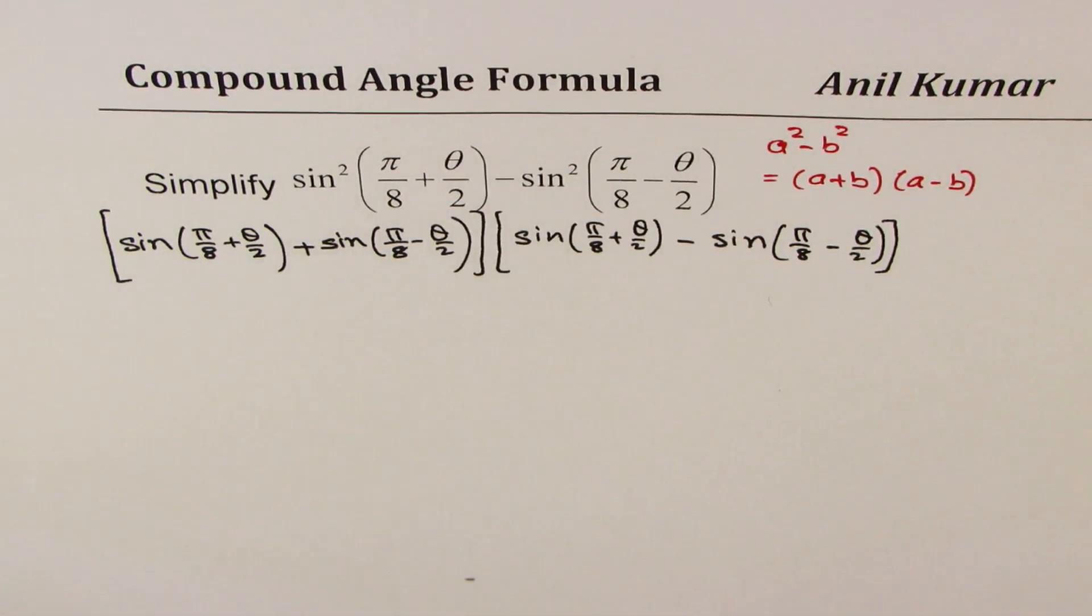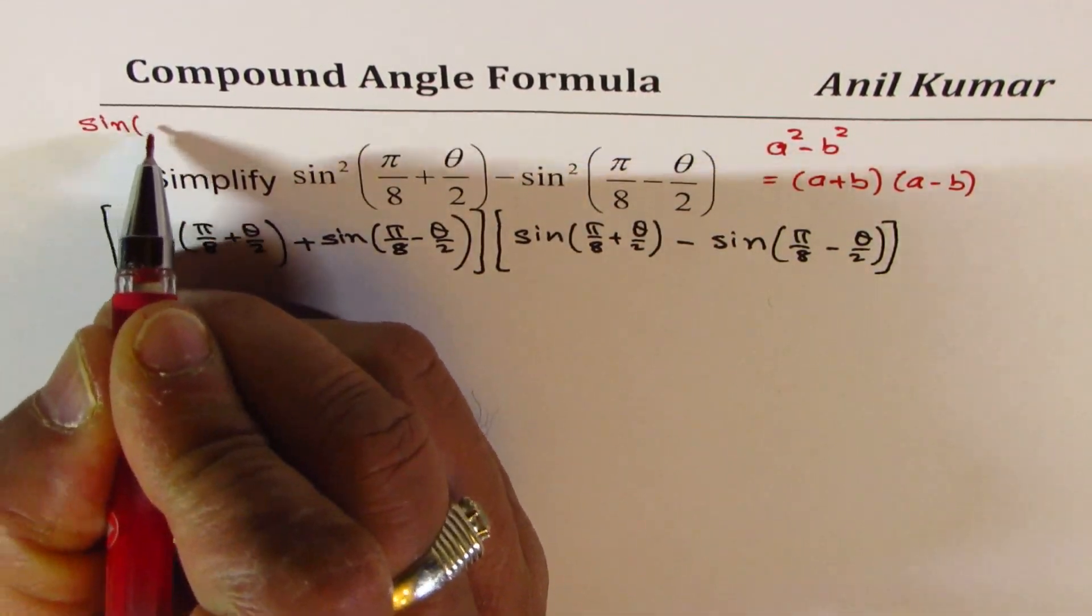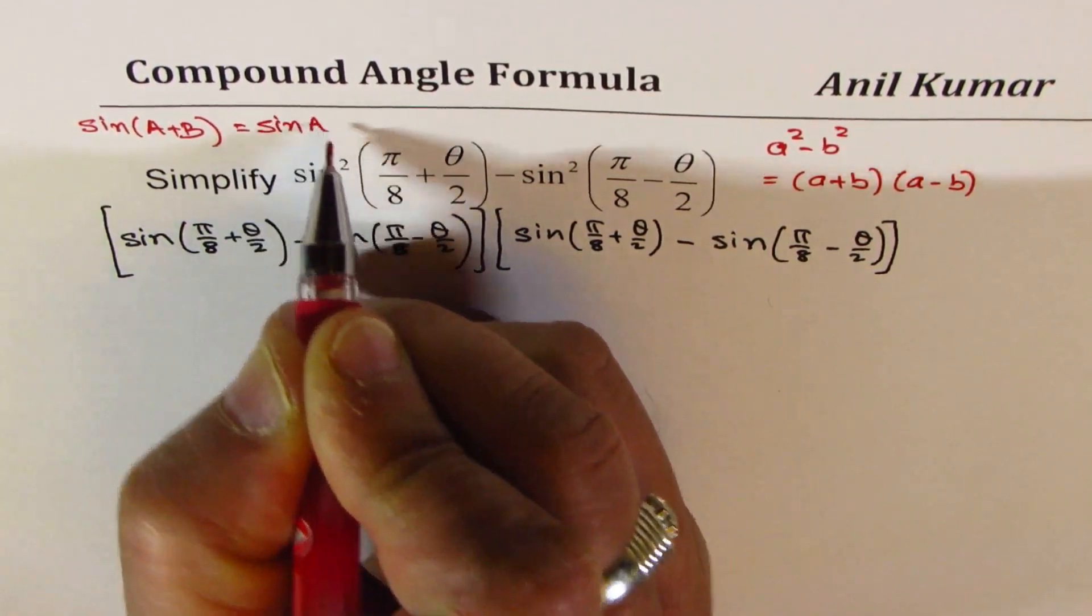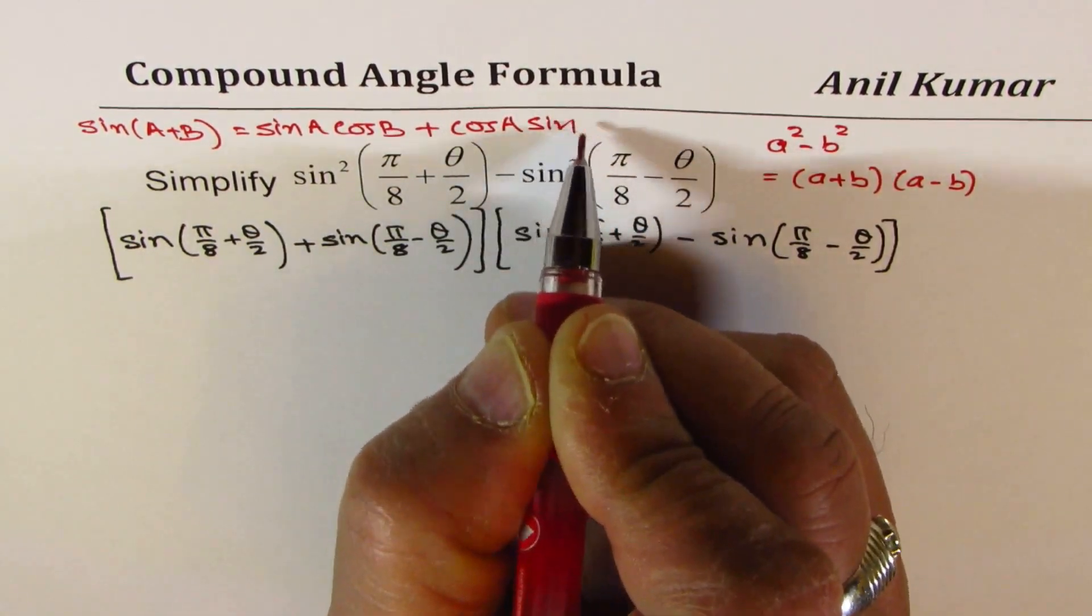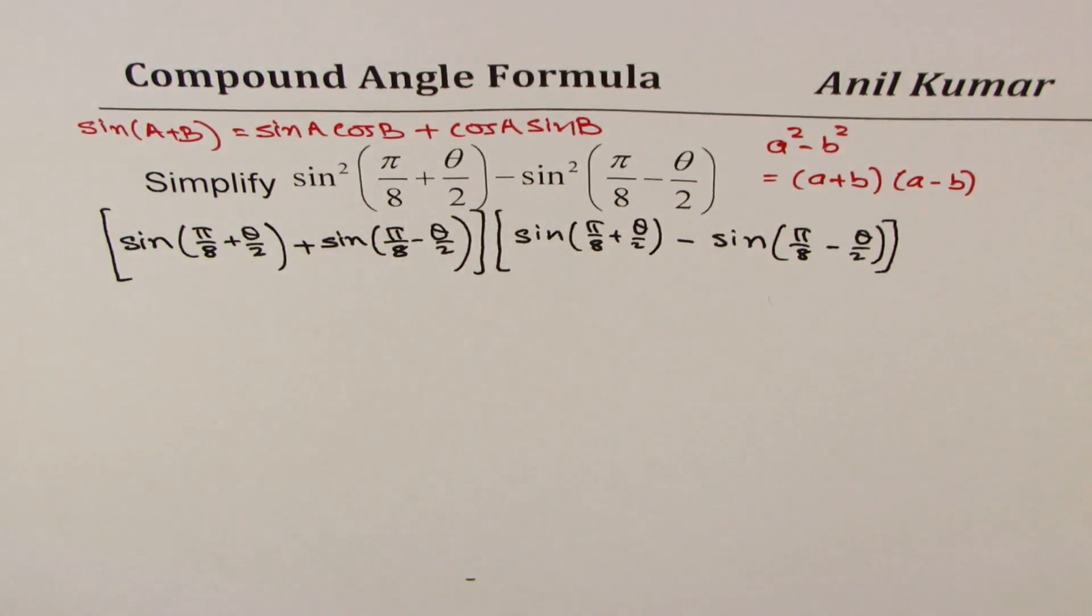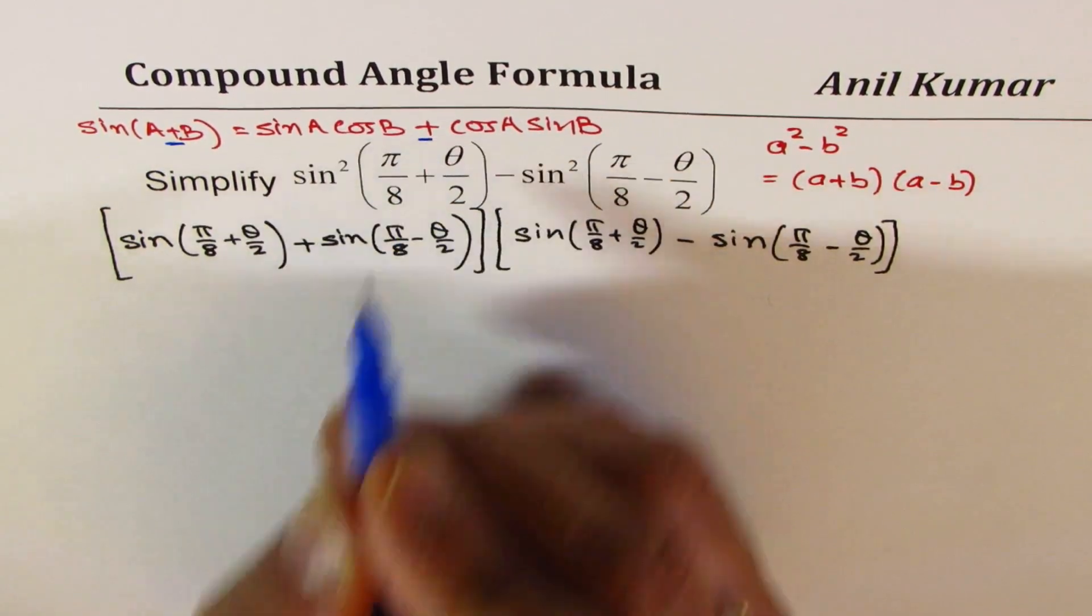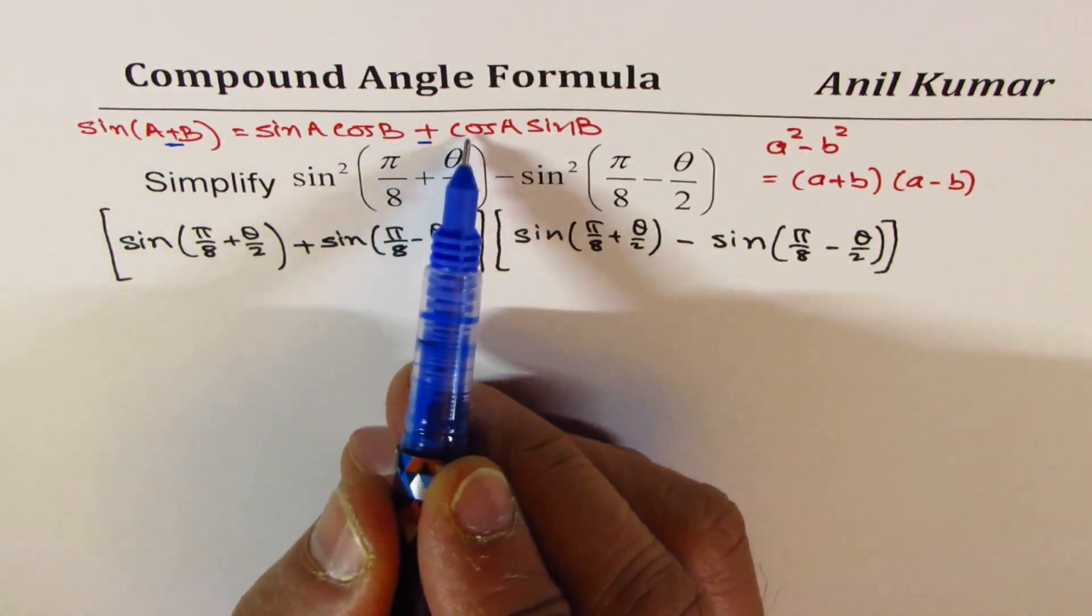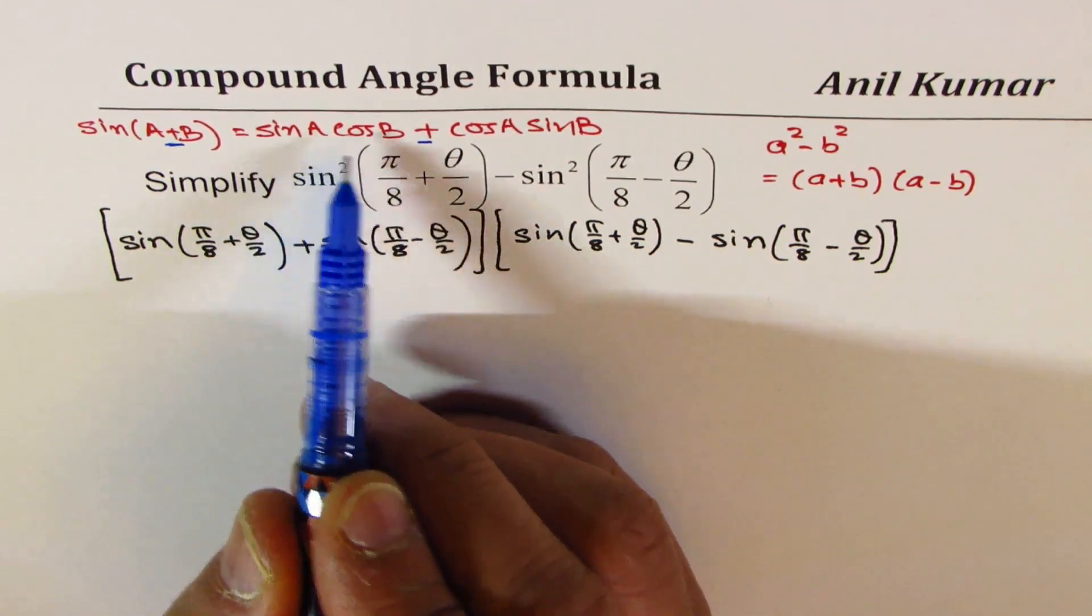When you add sin(a+b), let's rewrite the formula for sin(a+b). It is sin(a)cos(b) + cos(a)sin(b), correct? So recall, if I have a minus b, in that case, the sine is negative. When you add a+b with a-b, these terms cancel out and we get twice sin(a)cos(b).